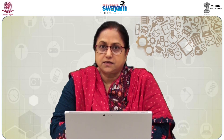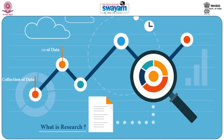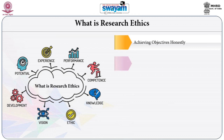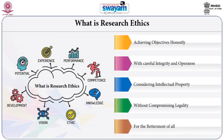To start with, let us understand what is research. It refers to collection of data, its organization, analysis, interpretation and utilization. Now let us understand what is research ethics. It means achieving objectives of the research honestly, with careful integrity and openness, considering intellectual property aspects, without compromising on legality and for the betterment of all.